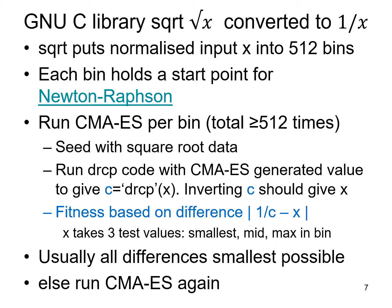With a good start value, Newton-Raphson will converge on the best possible floating point answer within three iterations. So for each of our 512 bins we're going to run CMA-ES, which is a fast optimizer. We seed it with the square root data and run CMA-ES with the function to take the reciprocal. That gives us a value — if we invert that value it should give us back the original value. Our objective function for CMA-ES is simply the difference between 1/c and x, so if we get exactly the right answer that difference would be zero.